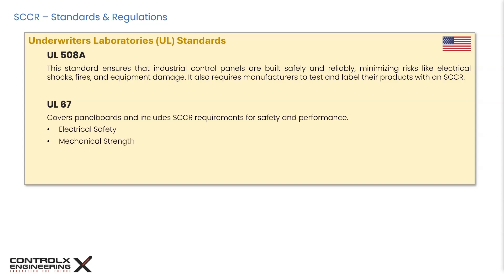UL 67 is a safety standard covering electrical panel boards, also known as distribution boards. It specifies that panel boards must be marked with the appropriate SCCR, which is essential for proper installation and coordination with other electrical equipment. UL 67 also covers design and construction aspects including insulation, wiring methods, grounding, and overcurrent protection to prevent electrical shocks and fires.